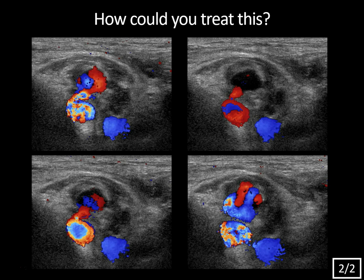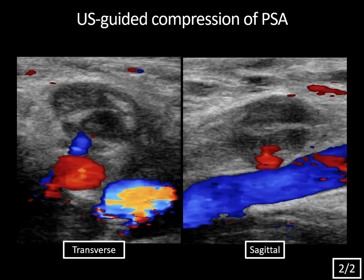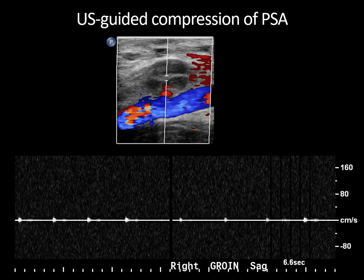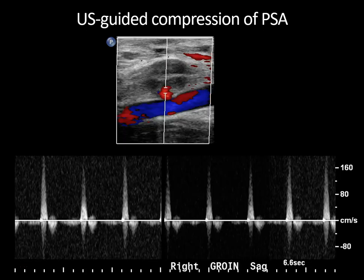So how could you treat this? In this case, it was treated with ultrasound-guided compression of the pseudoaneurysm. After compression, there is no longer any blood flow within the pseudoaneurysm sac. Another option is ultrasound-guided thrombin injection, which tends to be faster and has generally been shown to be more successful. It can also be done in patients who are anticoagulated. One contraindication for thrombin injection is the presence of an AV fistula. Spectral Doppler confirms no flow in the pseudoaneurysm sac after compression. Persistent flow within the neck typically occludes spontaneously over hours to days, which occurred in this patient.